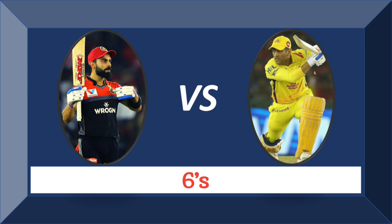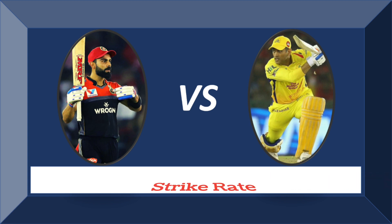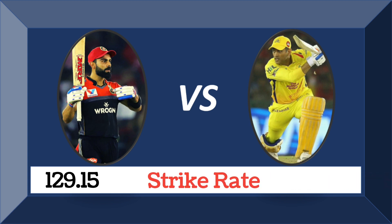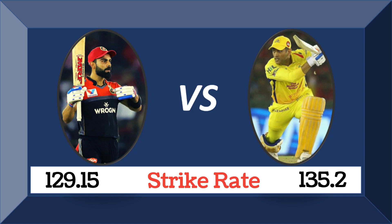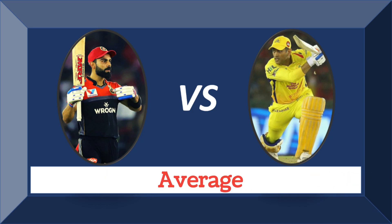Sixes: Kohli scored 218 sixes, Dhoni scored 229 sixes. Strike rate: Kohli's strike rate is 129.15, Dhoni's strike rate is 135.2. Batting average: Virat Kohli's average is 36.2, MS Dhoni's average is 39.2.